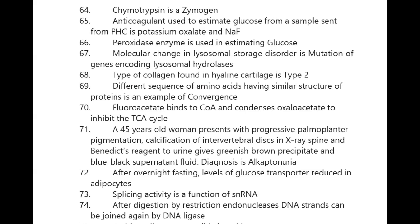Different sequences of amino acids having similar structure of proteins is an example of convergence. Fluoroacetate binds to coenzyme A and condenses with oxaloacetate to inhibit the TCA cycle.